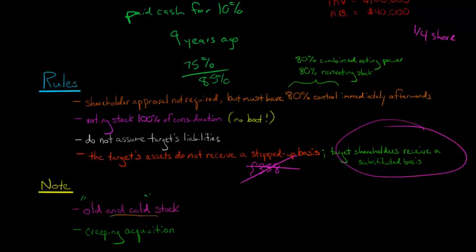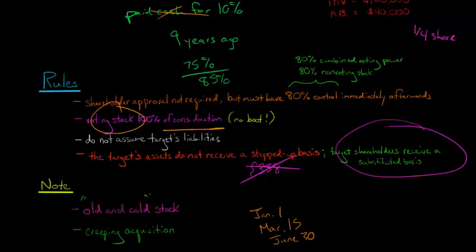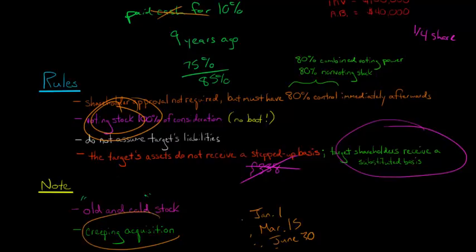You can also have what's called a creeping acquisition. Here, forget about cash entirely — it's purely stock for stock, but done gradually over time. For example, you exchange some stock on January 1st, more on March 15th, and more on June 30th. As long as it's part of an integrated plan, there's no cash or boot involved, and once you reach 80% control, you have a type B reorganization. A creeping acquisition structured this way won't create any issues and can result in a tax-free type B reorganization.